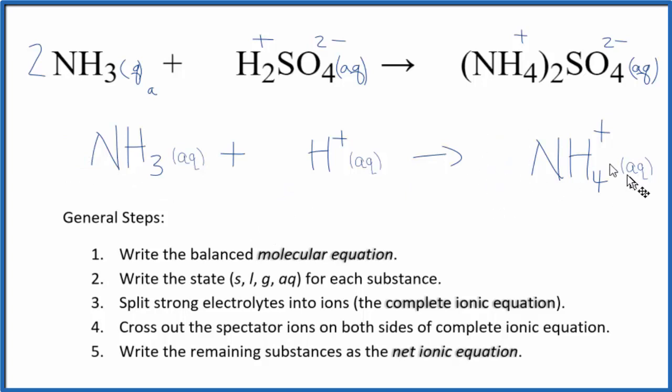So this is our net ionic equation. You'll note charge is conserved. We have a positive charge on this side, a positive charge on this side. And if you count the atoms up, they're the same on both sides. So mass is conserved as well.